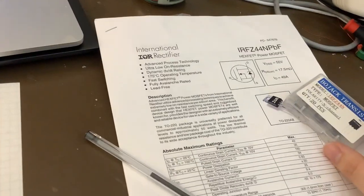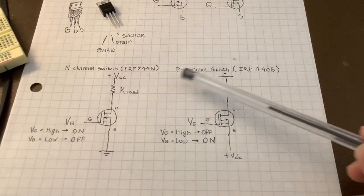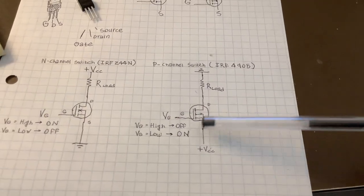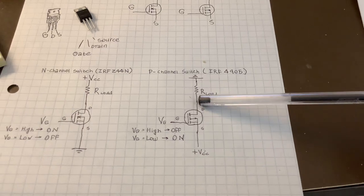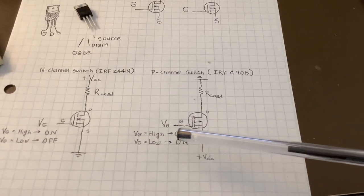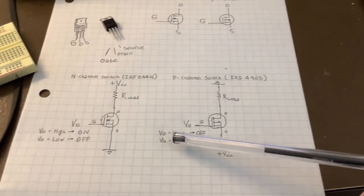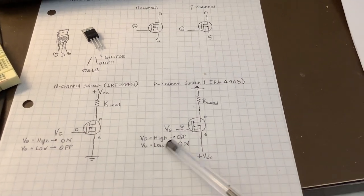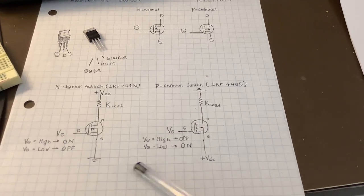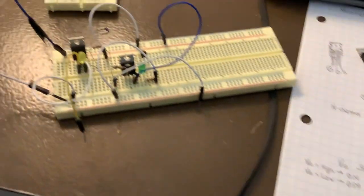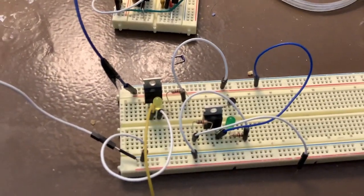For the p-channel MOSFET, I'm using the IRF4905. It looks exactly the same, but you are switching from the positive side of the load. The logic is reversed: if VG is high, it's the same as VS so it's off; if VG is low, there's a potential difference between gate and source, so it's on.